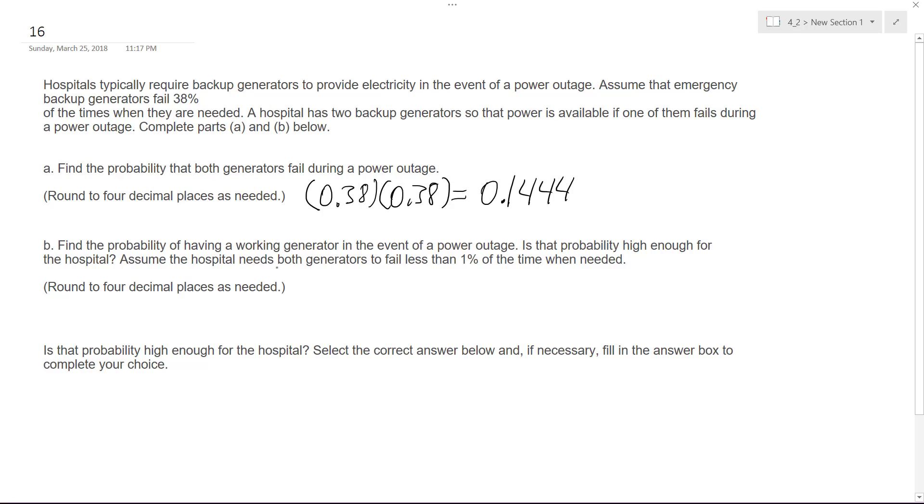All right, so find the probability of having a generator in the event of power outage. Is the probability high enough to assume that both generators fail less than one percent of the time when needed? I don't want to be on life support if this is ever the instance.